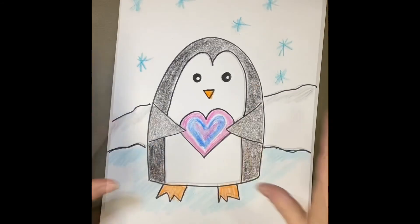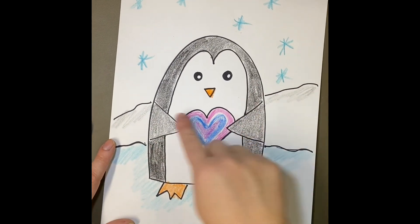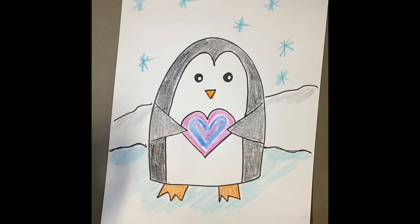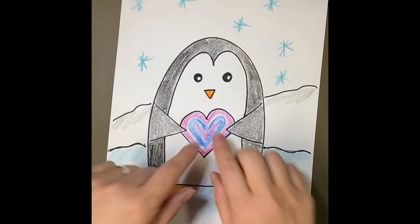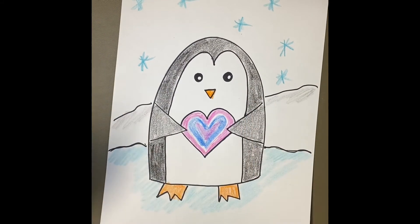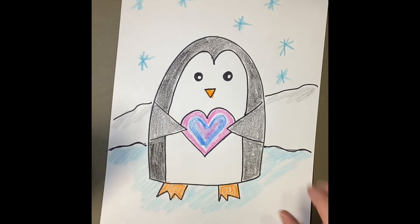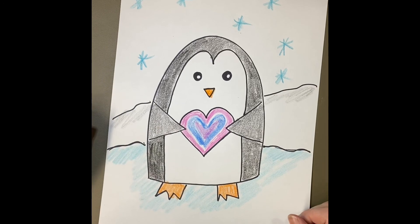So there we have the penguin. You see I added another line back here because maybe it's like a big hill. I colored a little bit of blue and gray, I added some snowflakes, and I colored the heart in. You can color the heart whatever color you want. You could put your penguin wherever you want—could even be in the water swimming around. I can't wait to see all of your penguins.